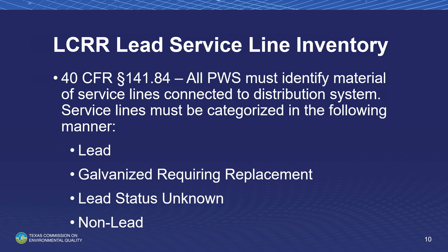Now we'll discuss the LCRR initial lead service line inventory. The Code of Federal Regulations, 40 CFR 141.84, outlines requirements for lead service line inventories and material categorization. Inventories must include all service lines connected to the distribution system, regardless of ownership. Service lines must be categorized as: lead; galvanized requiring replacement; lead status unknown — where there is no documented evidence supporting material classification; or non-lead — where the service line is determined through evidence-based record, method, or technique not to be lead or galvanized requiring replacement.